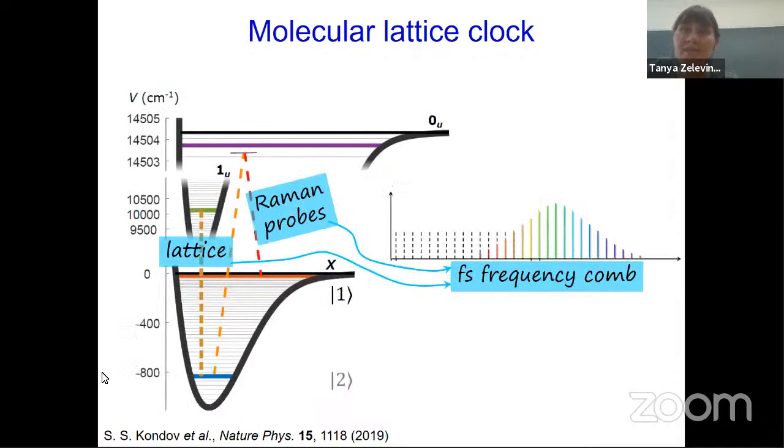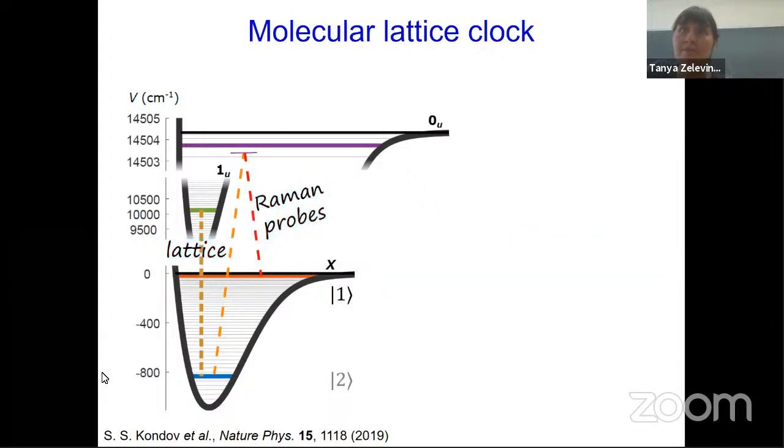Here, the details of the ground and excited molecular potentials are shown in some more detail. The absolute ground state is bound by approximately 1,000 wave numbers. Both probe lasers in the Raman configuration and the optical lattice are all phase-locked to an optical frequency comb. The clock states 1 and 2 are vibrational levels in the ground state. 1 is the most weakly bound, while 2 is quite deeply bound. The clock states are coupled by a coherent Raman transition. And this transition is via an off-resonant intermediate state. The optical lattice frequency, shown here with the dashed yellow line, is red detuned from the intercombination threshold. So it's in the infrared.